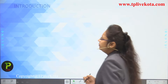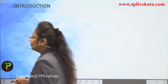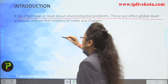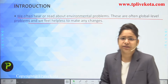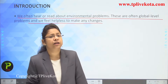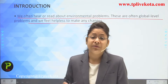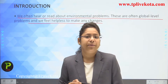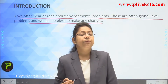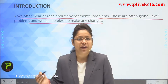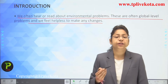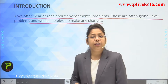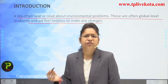The first point about this chapter: we often hear about environmental problems that are global-level issues and we feel helpless to make changes. We hear about global warming and rising temperatures, yet we take no steps — we are polluting our environment by using vehicles on a large scale, creating excessive exhaust pollution. We are also polluting water bodies by throwing plastic and tin cans, causing eutrophication from chemical fertilizers and pesticide run-off.